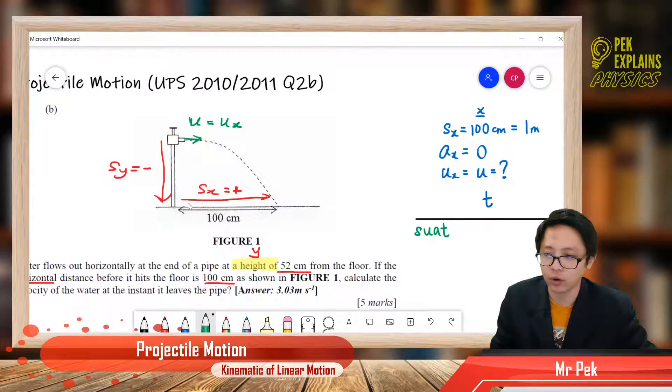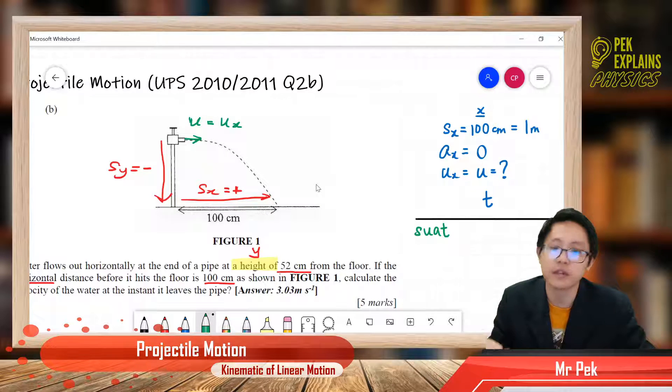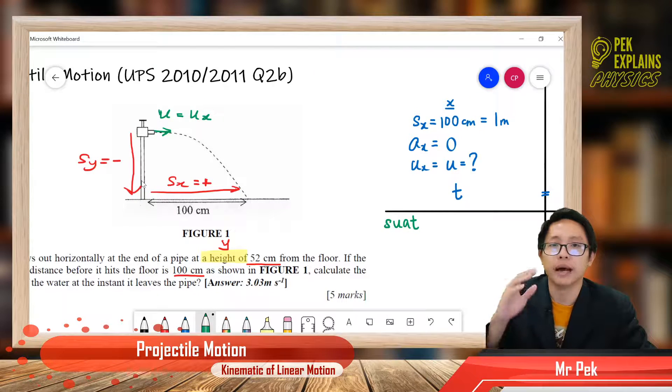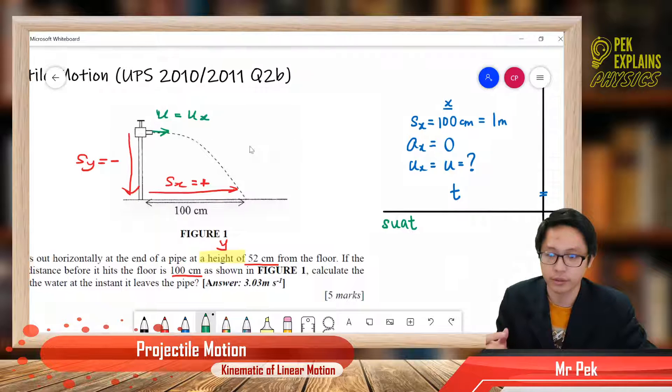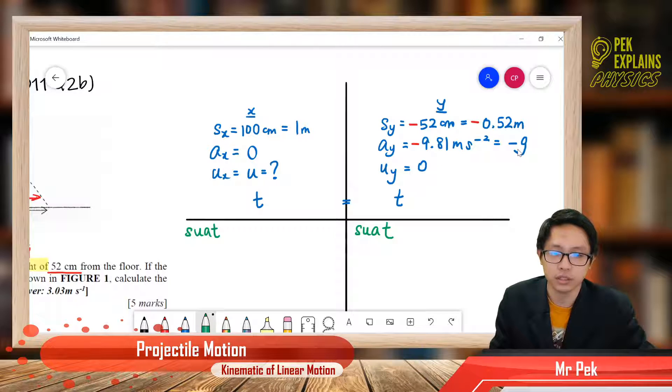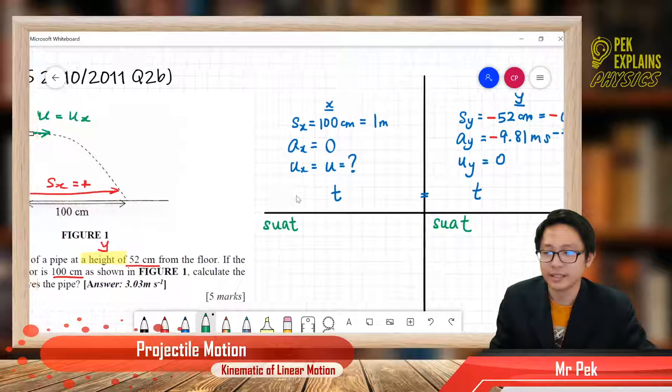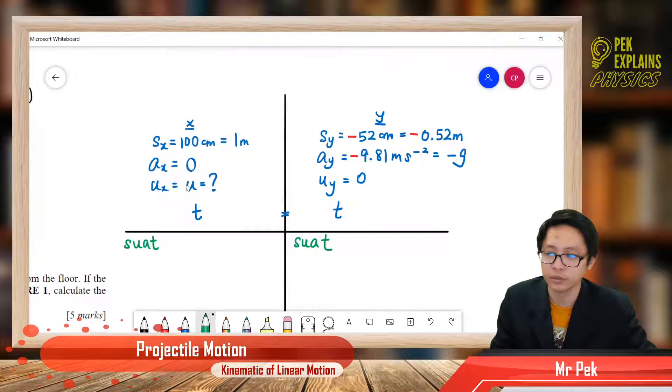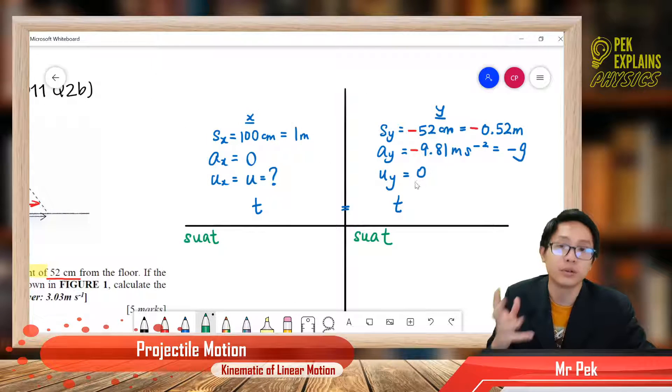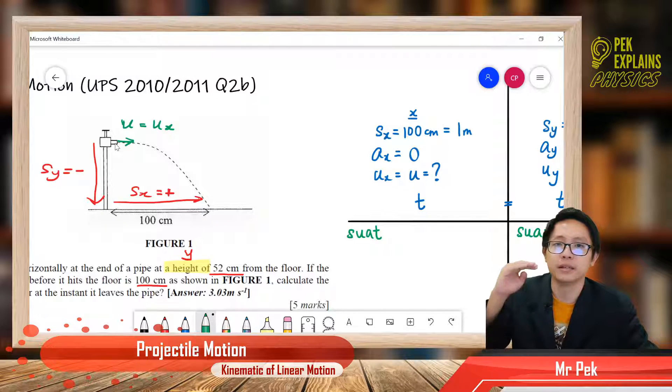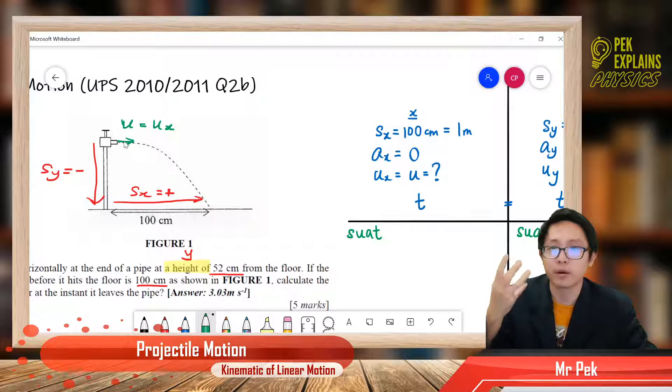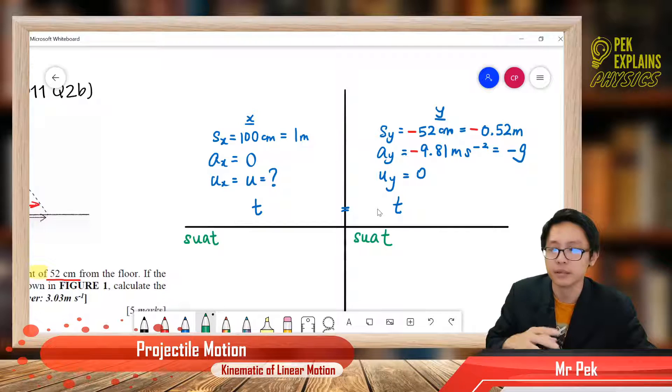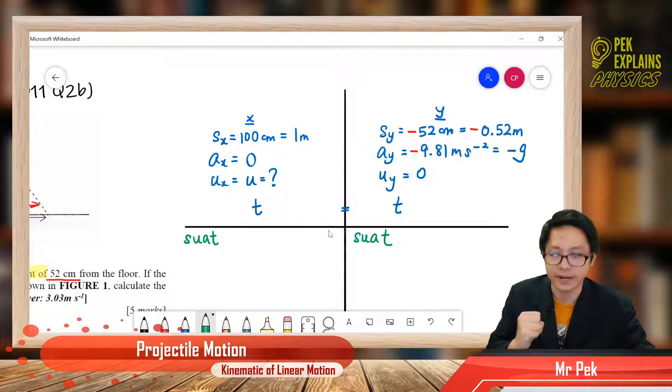We know that for horizontal displacement, it is constant velocity, that's why ax is 0. But for y component, it is like free fall motion, that's why ay is negative g, negative 9.81. We want to find the ux because ux is u. For y component, uy is 0, because initially it only has the x component velocity. It doesn't have y component velocity. The time for both components is the same because x and y component happens simultaneously.